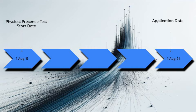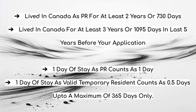Obviously to be able to apply for Canadian citizenship, you need to be a PR. So you should take into account that you should live in Canada for at least 730 days, or two years, as a PR. So if you have lived in Canada as a PR for at least 730 days, and in the past 5 years you have lived in Canada for 1095 days, then you may be eligible as far as your physical presence criteria is concerned.